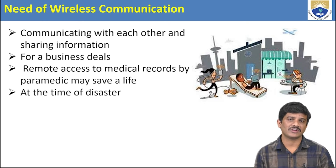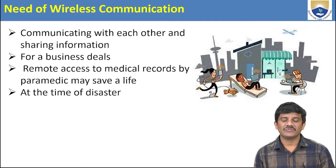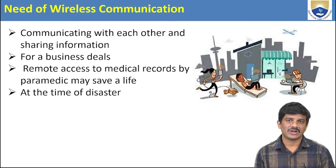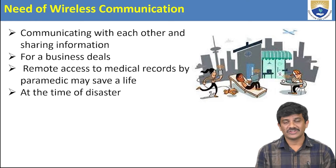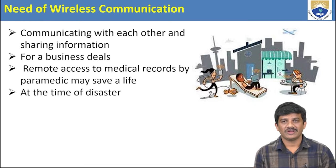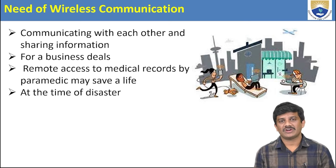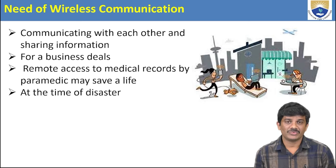Nowadays we can share information and data from one person to another person. Wireless communication is mainly used for business deals, medical records via paramedical mail which saves lives, and whenever a disaster comes, we can also communicate easily with each other. That is the main need of wireless communication.